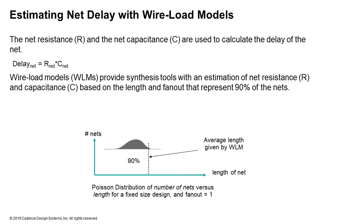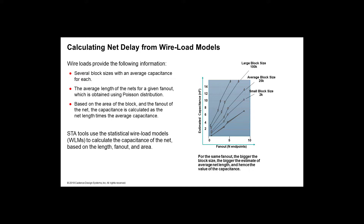Because wire loads are statistically weighted, they are somewhat pessimistic and may be unreliable for some designs, but they still provide a good estimate useful for critical path analysis and as a starting point for synthesis. You determine the area that a particular net fits in, then use the wire load selection table to select the block area enclosing that net, use the wire load model to estimate wire length, and apply capacitance and resistance multipliers to determine the actual RC delay.